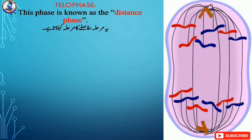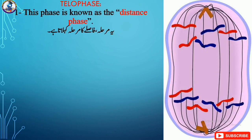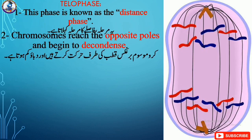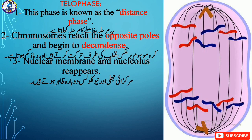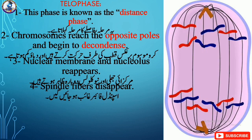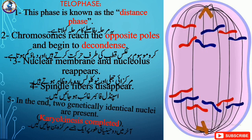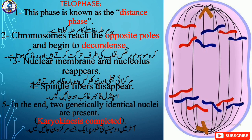The fourth and last stage of mitosis is telophase, usually known as the distance phase. In this phase, chromosomes reach the opposite poles and begin to decondense. The nuclear membrane and nucleolus, which disappeared in prophase, start appearing again. Spindle fibers disappear. In the end, two genetically identical nuclei are present.